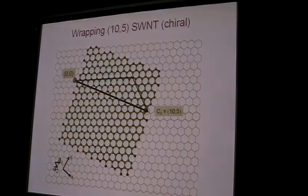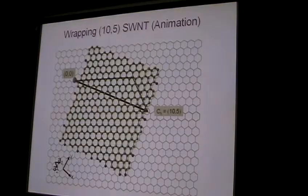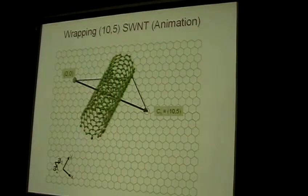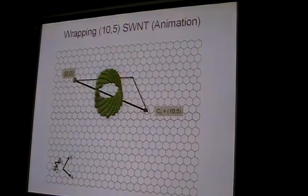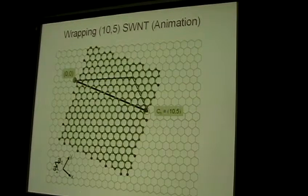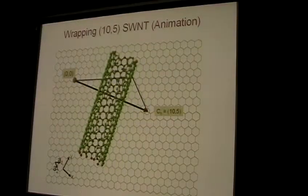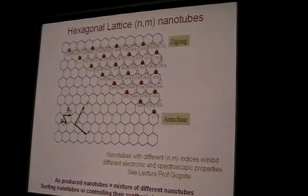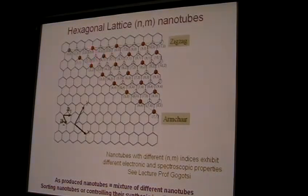This is a (10,5) carbon nanotube. You've already heard about this kind of carbon nanotube. You can see the twist here, and the carbon nanotube is characterized by the indices 10 and 5. In fact, you can make different kinds of carbon nanotubes.